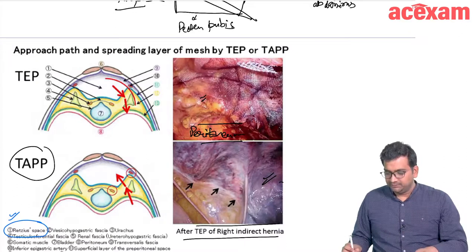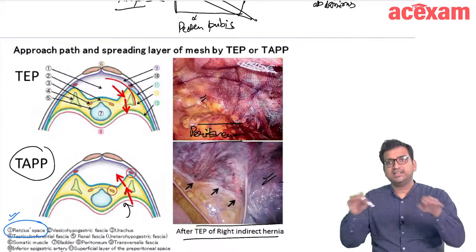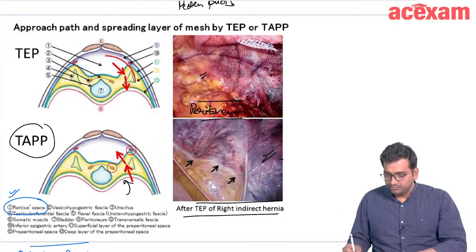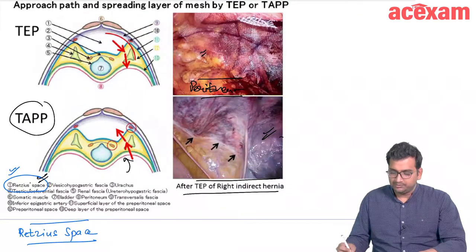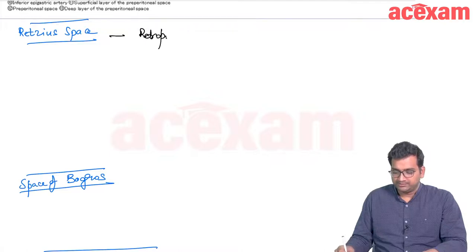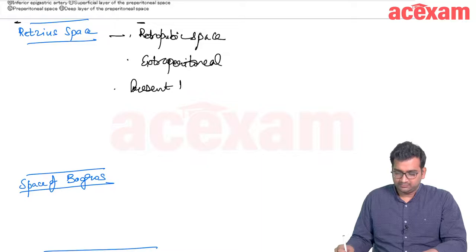In TAPP repair, we go from inside the abdomen, incise the peritoneum to make a flap, place the mesh, then cover it with the peritoneum. Retzius space is a retropubic extraperitoneal space between the pubis and the urinary bladder.